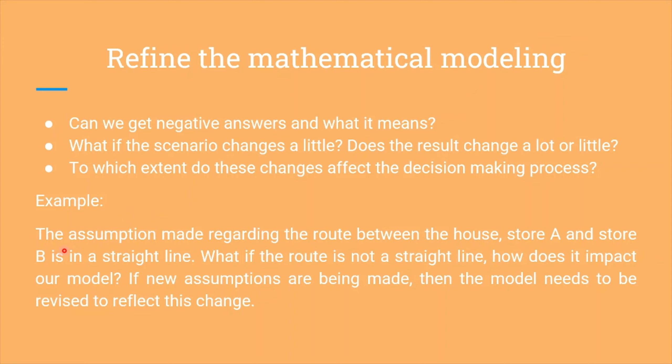For example, the assumption regarding the route between the house, store A and store B is in a straight line. What if the route is not a straight line? How does it impact our model? If new assumptions are being made, then the model needs to be revised to reflect this change.